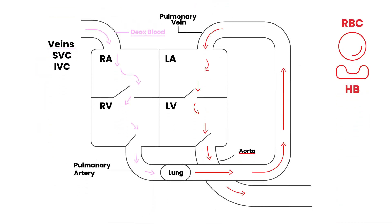What is that one problem? I'll use the color brown to highlight the ventricular septum. That septum is what is the main issue here. Watch what happens — this septum deviates.